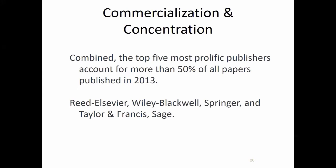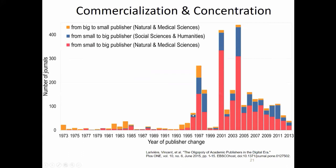Five publishers essentially control more than 50% of our scholarly discourse. This has been a gradual process but definitely picked up steam in the past 20 years. This graph shows the movement of individual journal titles from small to large publishers — and our collective experience validates this data — we've seen a concentration of the business of scholarly communication into a small subgroup of publishers.